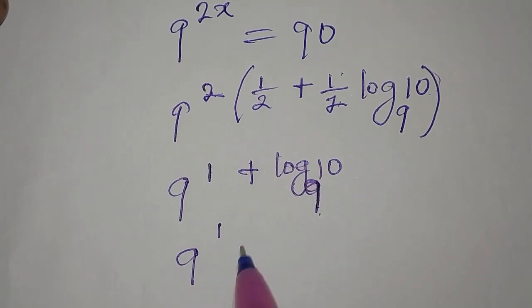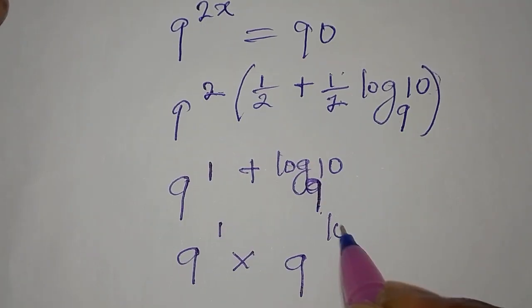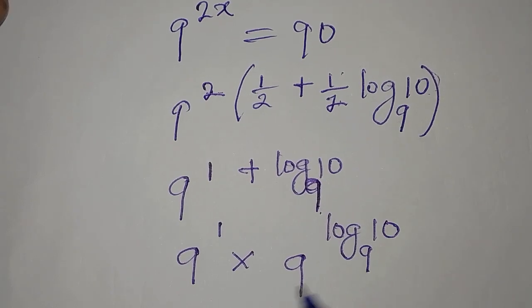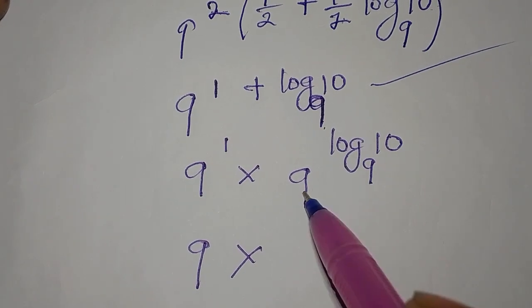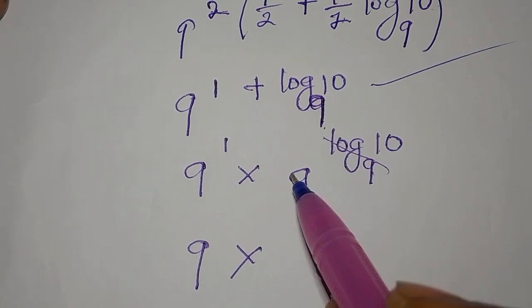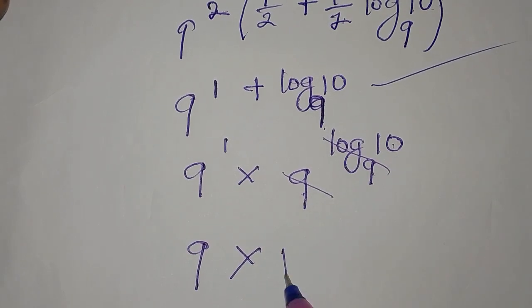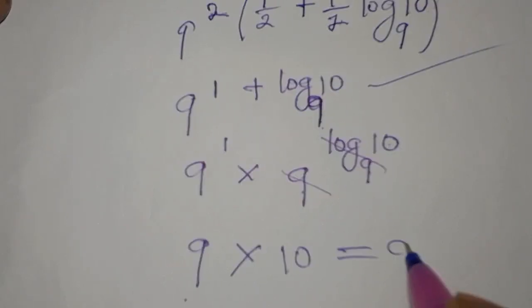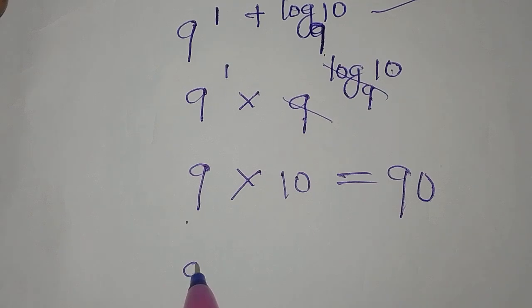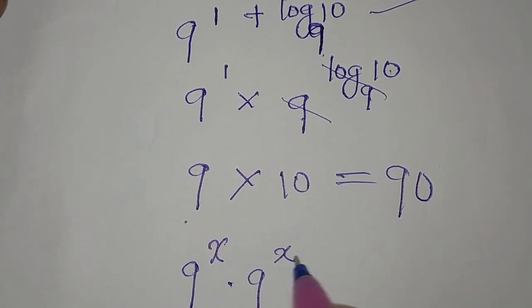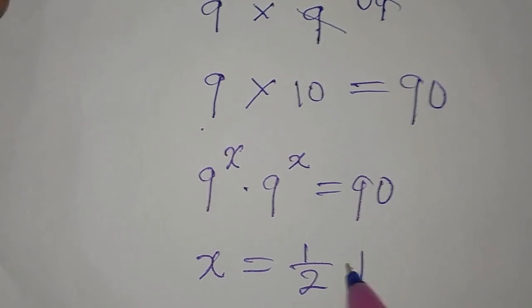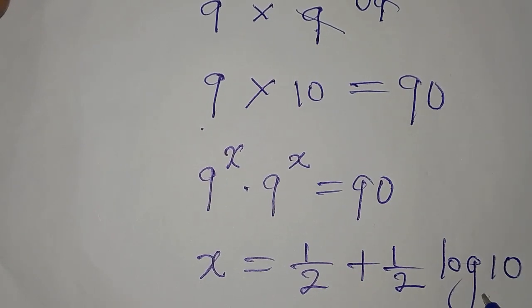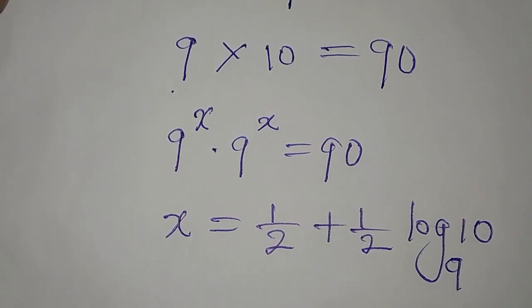Applying the law of indices, 9 to the power of 1 plus log 10 to base 9 becomes 9 to the power of 1 multiplied by 9 to the power of log 10 to base 9. Since 9 to the power of 1 is 9, and by the inverse property of logarithms 9 to the power of log base 9 of 10 equals 10, we get 9 times 10, which is 90. This matches the original equation, confirming that x equals 1 over 2 plus 1 over 2 log 10 to base 9. Thank you for watching, and do subscribe to my channel.